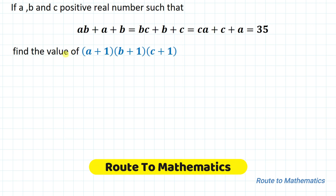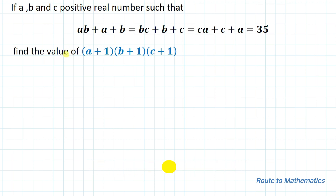Hello everyone, welcome to Root2Mathematics. In this video, I am going to solve this interesting Olympiad question. The given question is: if A, B and C are positive real numbers such that AB plus A plus B equals BC plus B plus C equals CA plus C plus A equals 35, then find the value of (A+1)(B+1)(C+1).